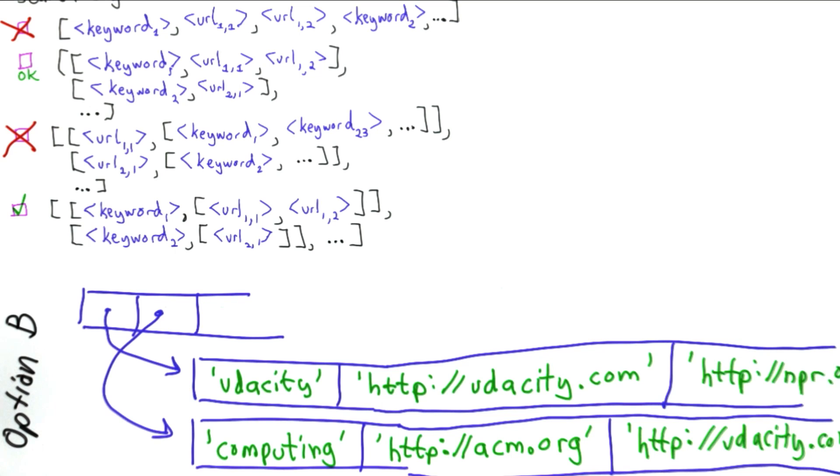The reason that I think option D is better is it makes a better separation between the keywords and the URLs. So the difference between this and option D is in option D, instead of the inner list being flat lists that are the keyword followed by the URLs, the inner list has just two elements.